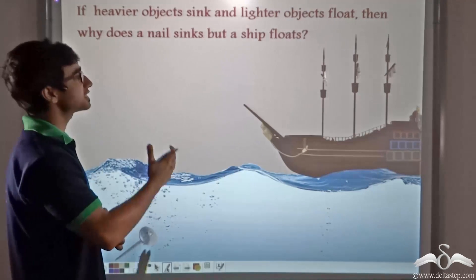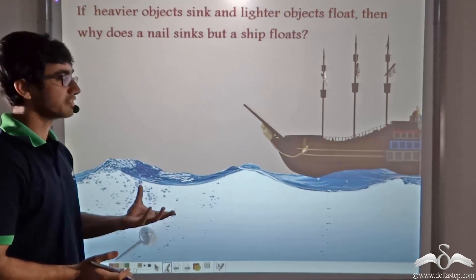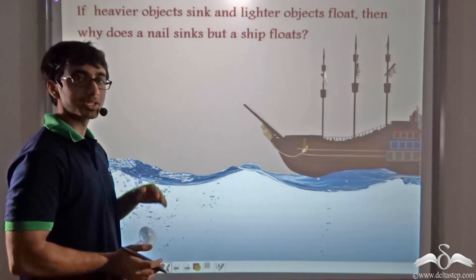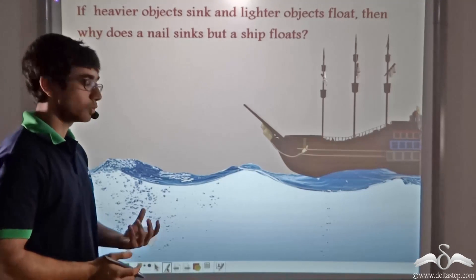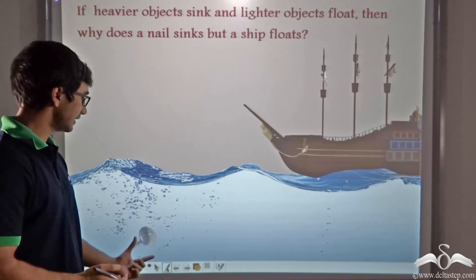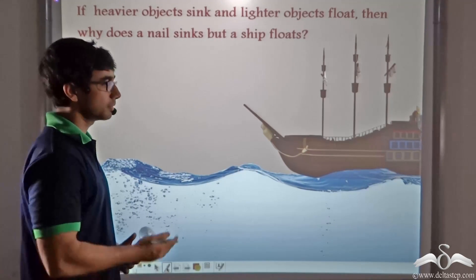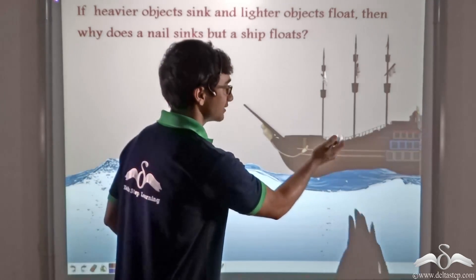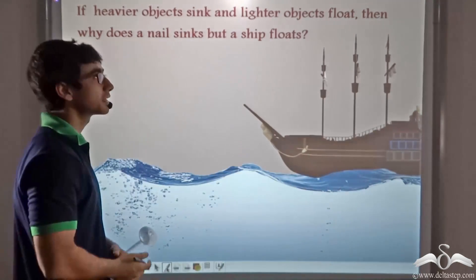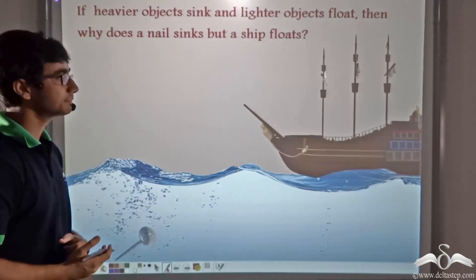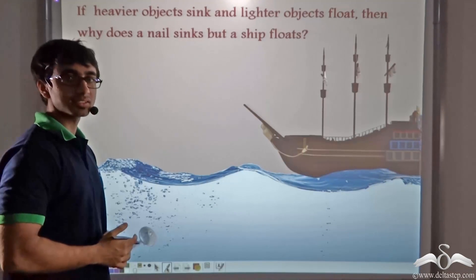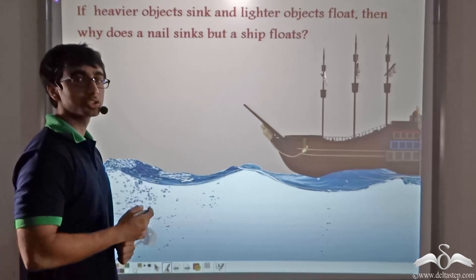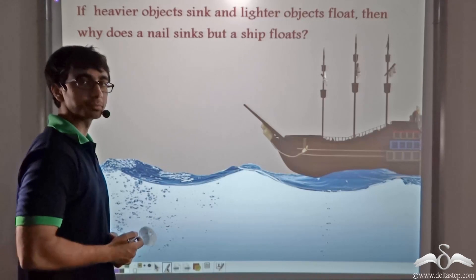Now it is common knowledge that a heavier object sinks in water but a lighter object floats. Why is it that this light pin is sinking but this heavy ship is not sinking but floating? To find out the answer, let us explain it on the basis of Archimedes' principle.